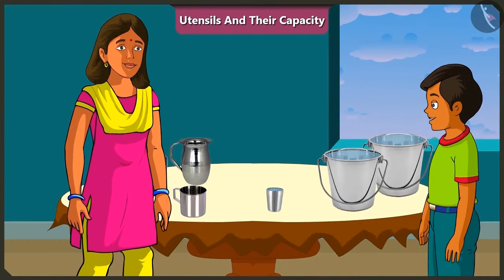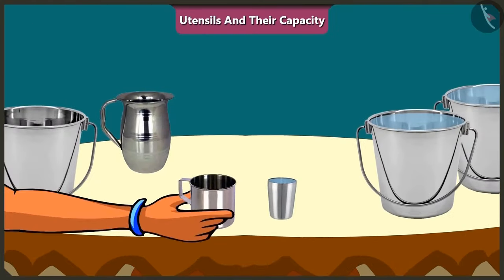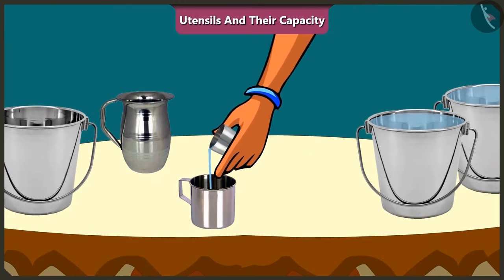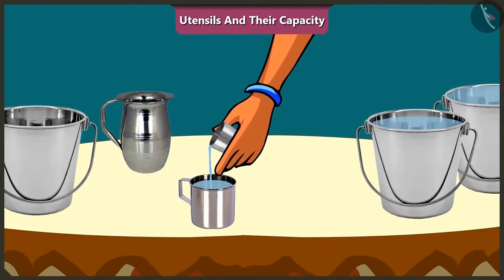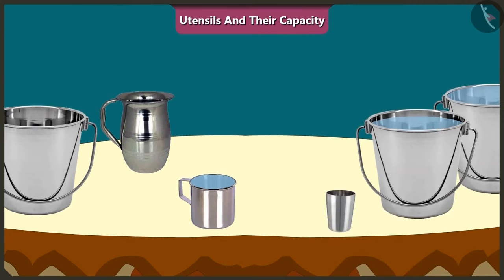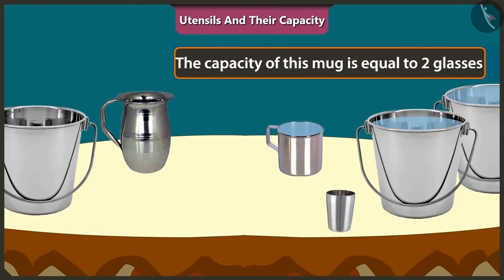Yes, I understood. Now, with the help of this glass, I will fill this mug. One glass and one more, that is two glasses. We can fill this mug with two glasses of water. This shows that the capacity of this mug is equal to two glasses of water.